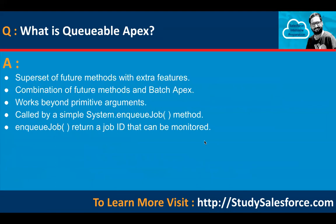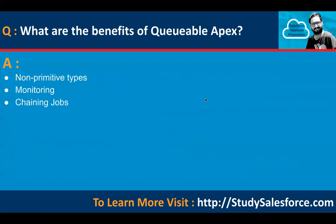What is Queueable Apex? It is a superset of future methods with extra benefits — a combination of future methods and Batch Apex. It works with non-primitive arguments, and is called via the simple System.enqueueJob() method, which returns a job ID that can be monitored. It has additional features over future methods, including the ability to use non-primitive types, monitor jobs, and chain jobs.